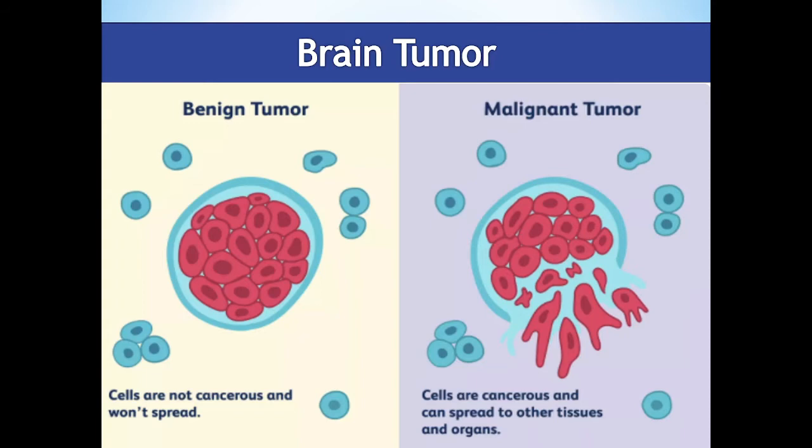Computed tomography CT scan and magnetic resonance imaging MRI are the best techniques to detect brain tumors, as they create a clear picture of the inner parts of the brain that are usually hard to see.